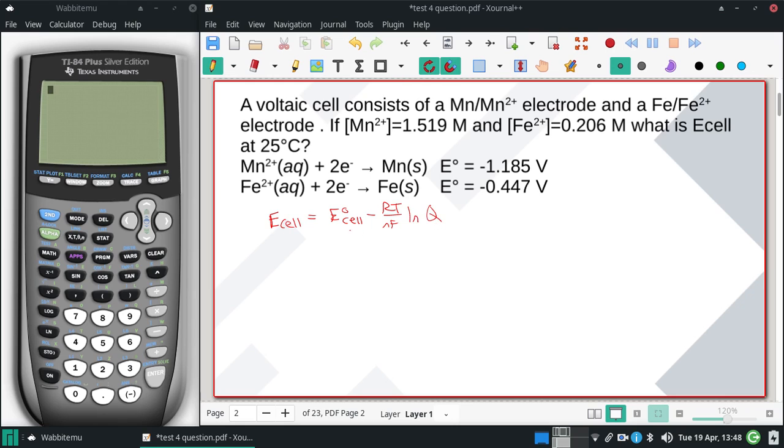To get Q and E° of the cell, I need to determine which electrode is the anode and which is the cathode. I'm making the top one my anode because it has the smaller E° value.